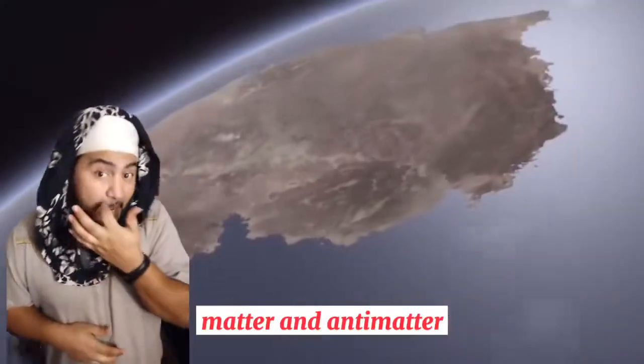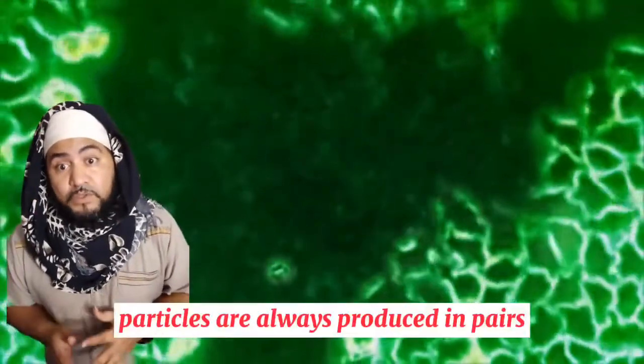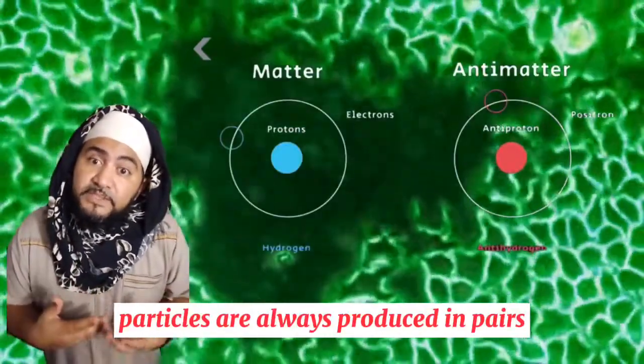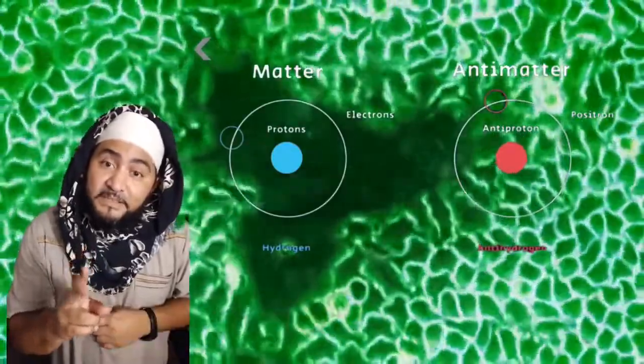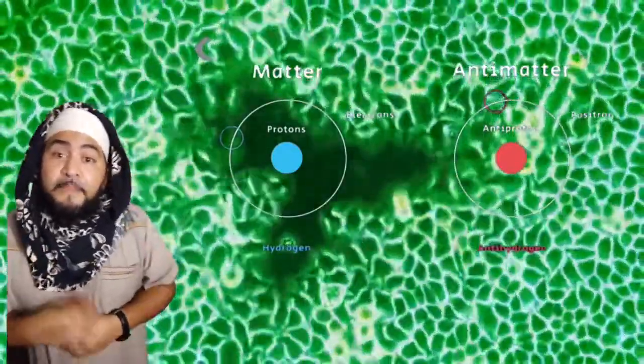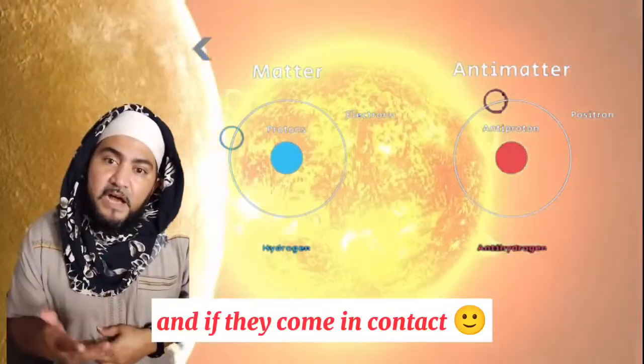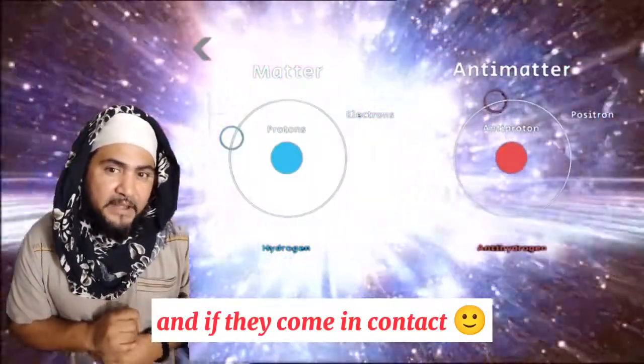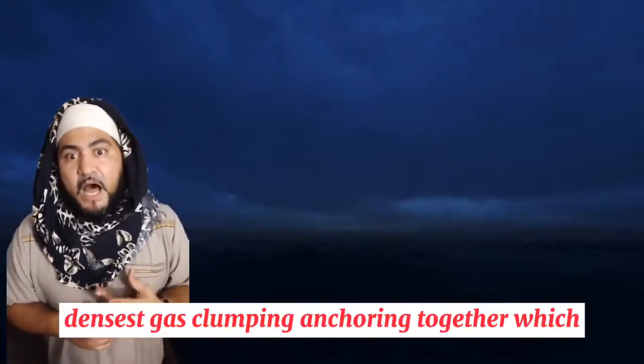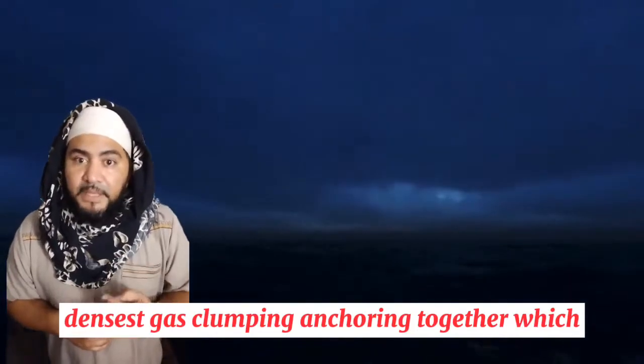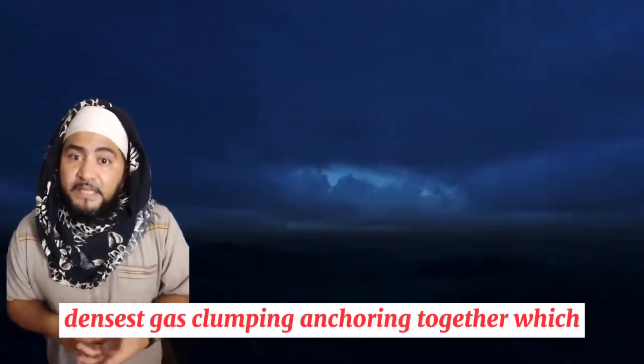Matter and anti-matter particles are always produced in pairs. And if they come in contact with their pairs after that, gas clumping, anchoring together, which eventually led to the formation of the stars and even galaxies.